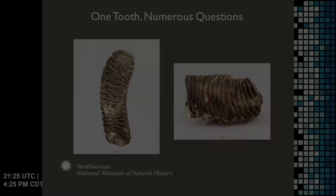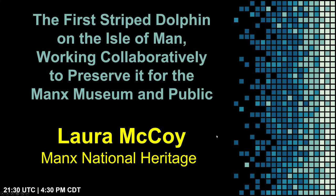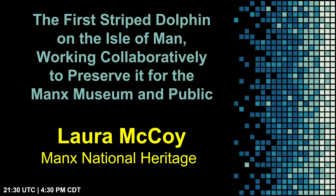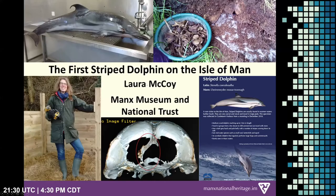Laura McCoy from Manx National Heritage presents 'The First Striped Dolphin on the Isle of Man — Working Collaboratively to Preserve It for the Manx Museum and Public.' I am the natural history curator for Manx National Heritage on the Isle of Man. The Isle of Man is in the Irish Sea between Ireland and the UK — a crown dependency, autonomous from the UK, 30 miles long by 10 miles wide with a population of 84,000. We are very small and our resources are split, so we often have to work cross-departmentally because not one institution will have all the means to deal with all problems.